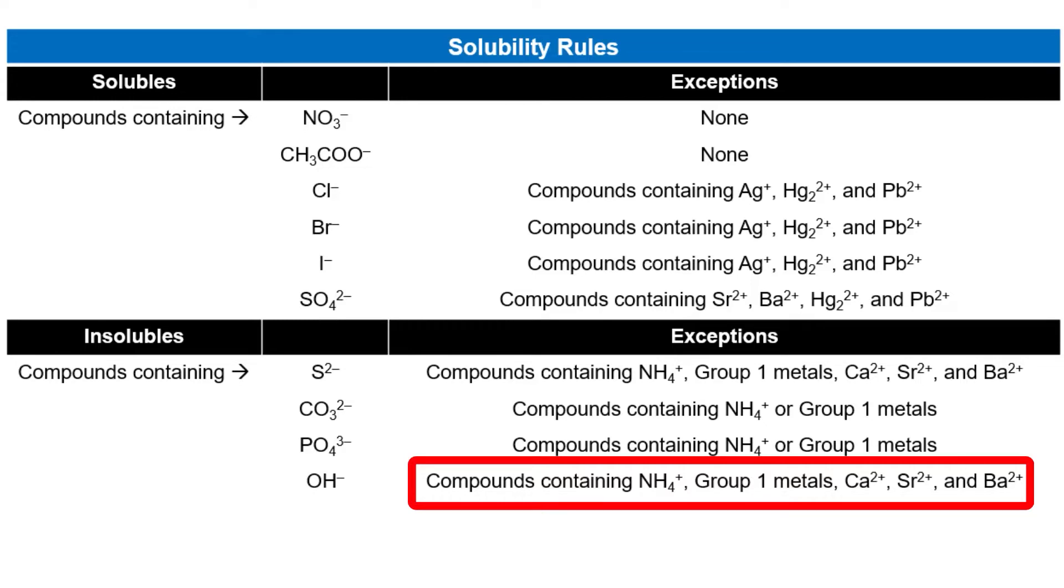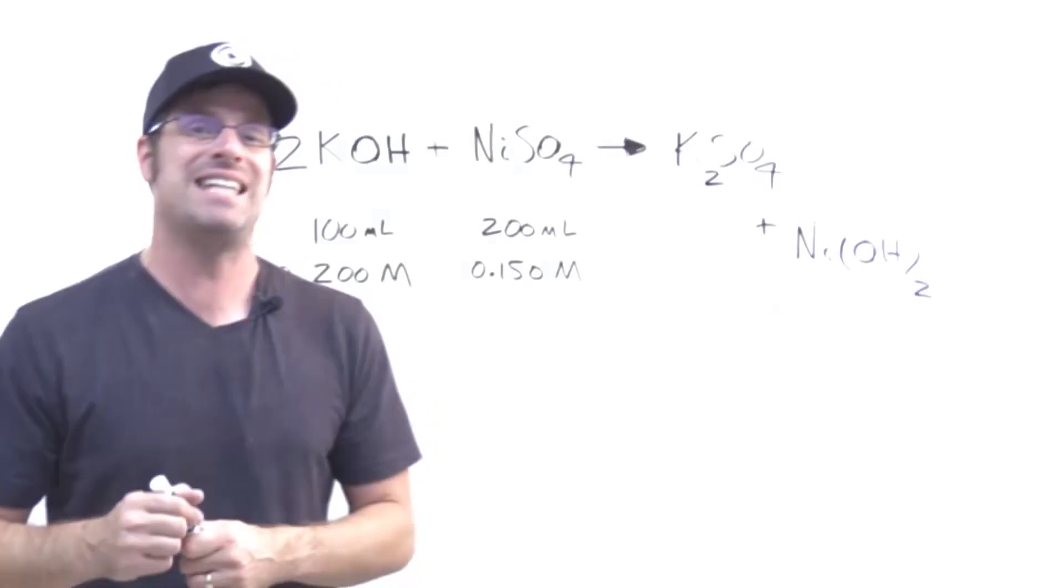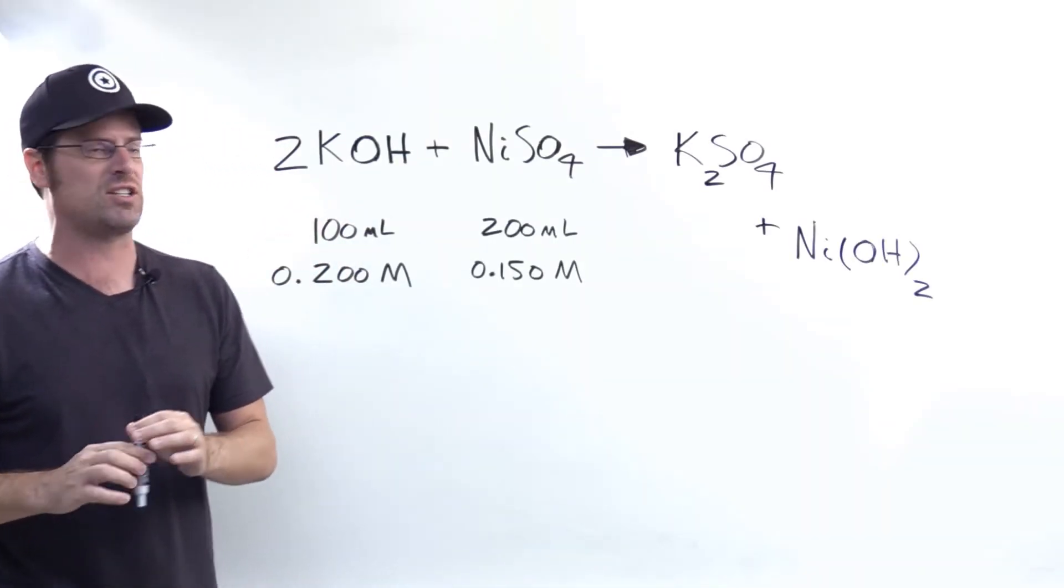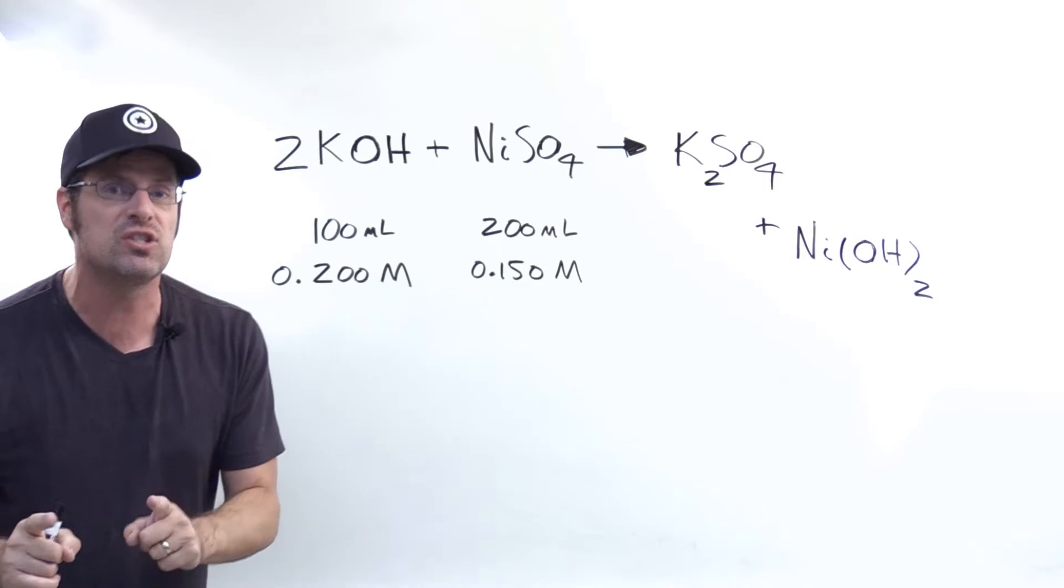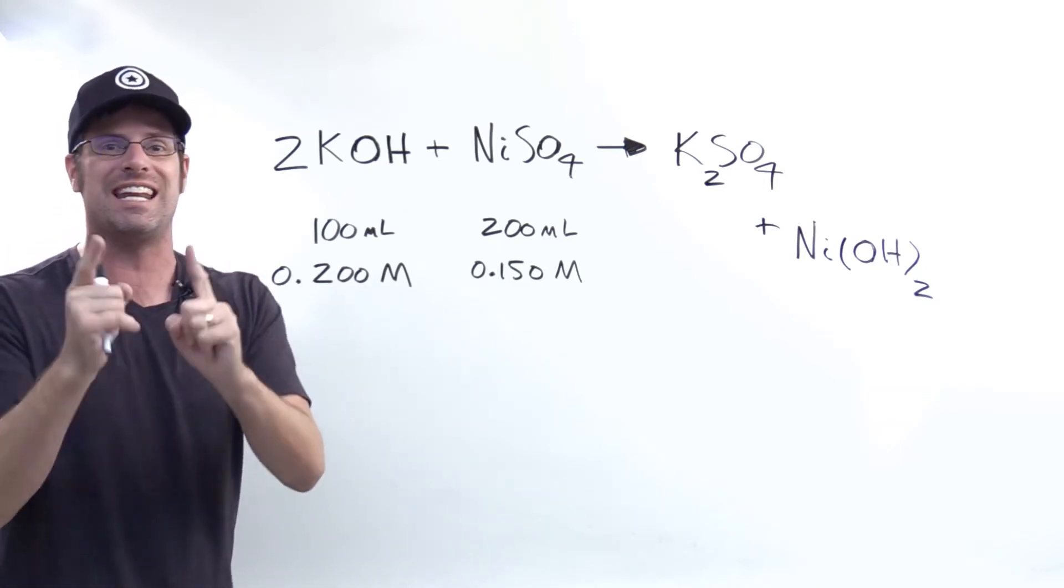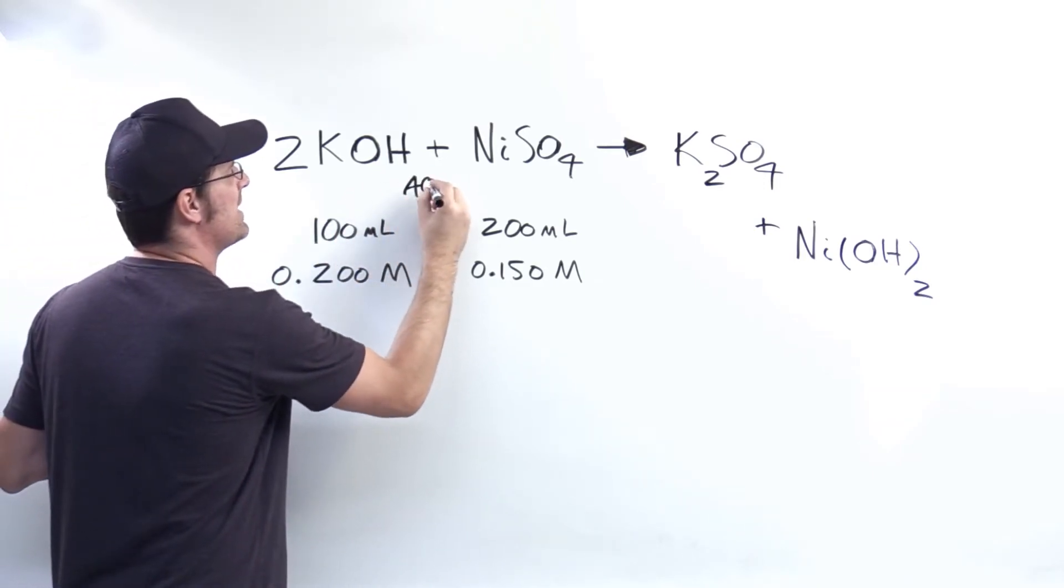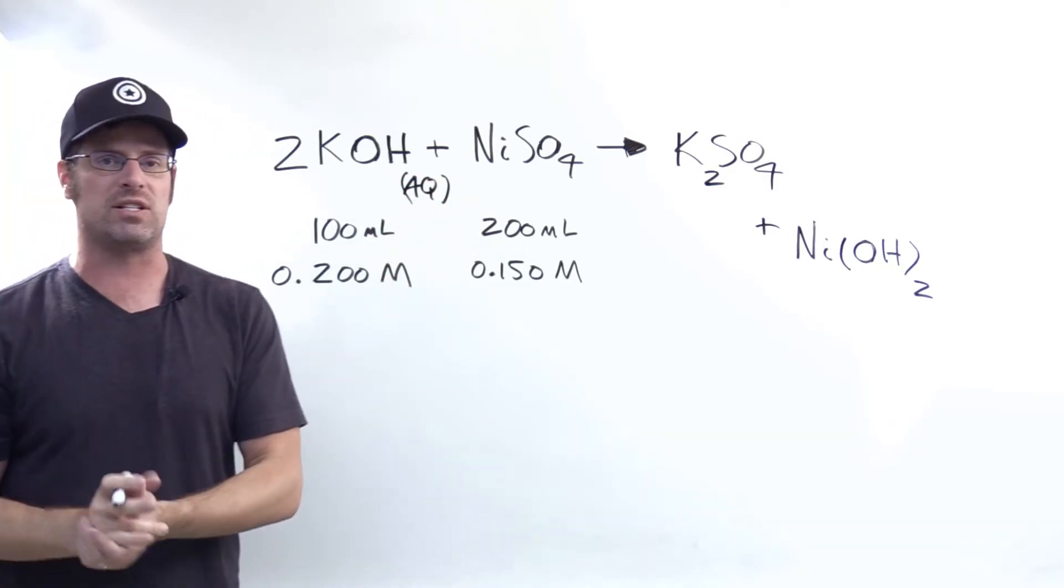It says that hydroxides here are insoluble except for compounds containing NH4+, that's ammonium, group one metals, calcium, strontium, and barium. Now potassium, as it turns out, is a group one metal. So it is one of those exceptions, which means that KOH is not insoluble, which means that it is soluble. So we write AQ next to it, indicating that it will dissolve in water to form aqueous ions.